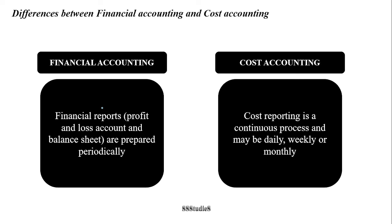Financial reports — the profit and loss account and balance sheet — are prepared at the end of the financial year, so they cover one financial year as the period. Whereas in case of cost accounting, cost reporting is a continuous process; it may be prepared daily, weekly, or monthly as and when the management asks for it. That is one of the differences between financial accounting and cost accounting.